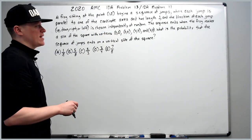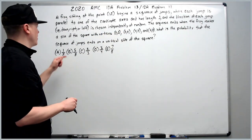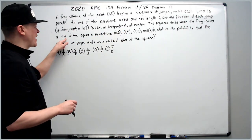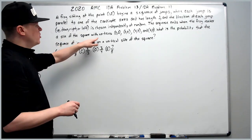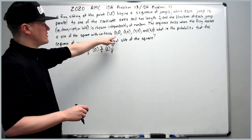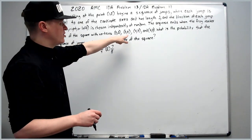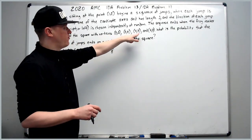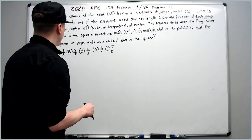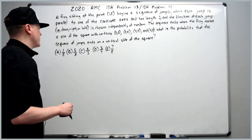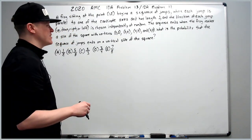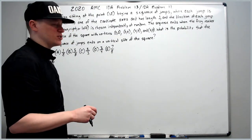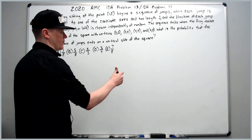The sequence ends when the frog reaches a side of the square with vertices (0,0), (0,4), (4,4), and (4,0). What is the probability that the sequence of jumps ends on a vertical side of the square?